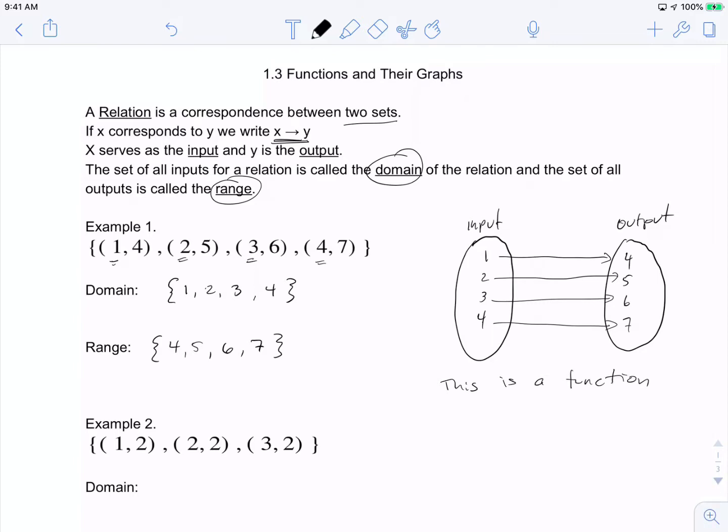Because each input maps exactly to one output, this is a function. Since 1 only goes to one number, 2 only goes to one number, 3 only goes to one number, and 4 only goes to one number, this is a function.